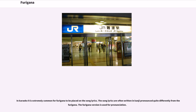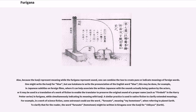In karaoke it is extremely common for furigana to be placed on the song lyrics. The song lyrics are often written in kanji pronounced quite differently from the furigana, and the furigana version is used for pronunciation. Because the kanji represent meaning while the furigana represents sound, one can combine the two to create puns or indicate meanings of foreign words — one might write the kanji for a concept but use katakana to write the pronunciation of the English word. This may be done in Japanese subtitles on foreign films, where it can help associate the written Japanese with the sounds actually spoken by the actors, or in a translation of fiction to preserve the original sound of a proper name such as Firebolt in the Harry Potter series, while simultaneously indicating its meaning with kanji.